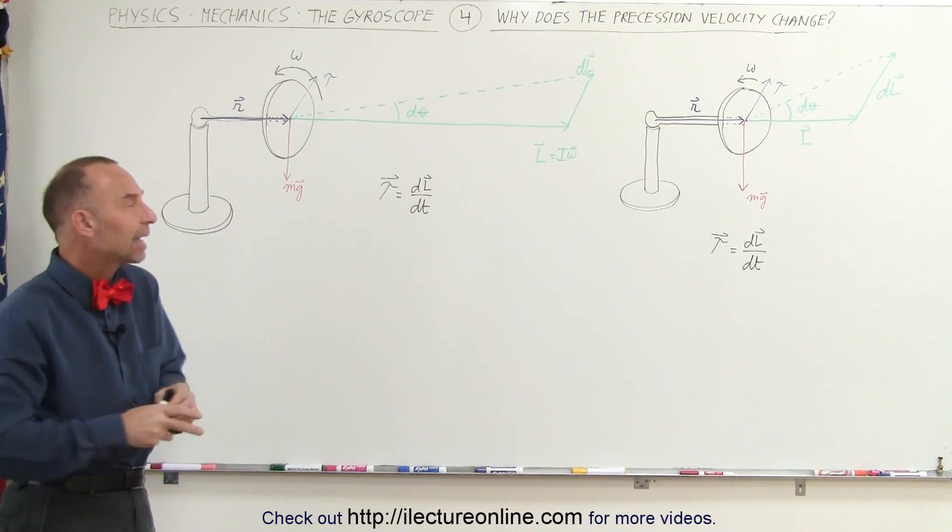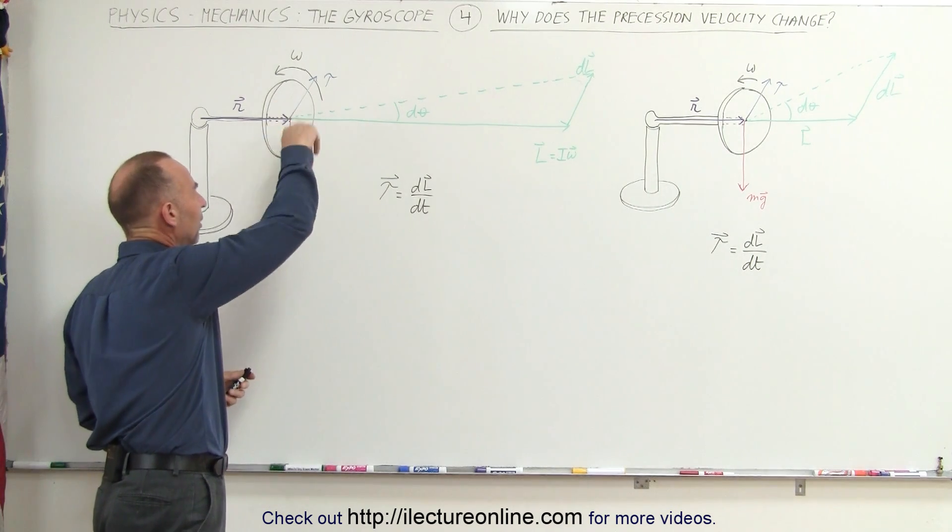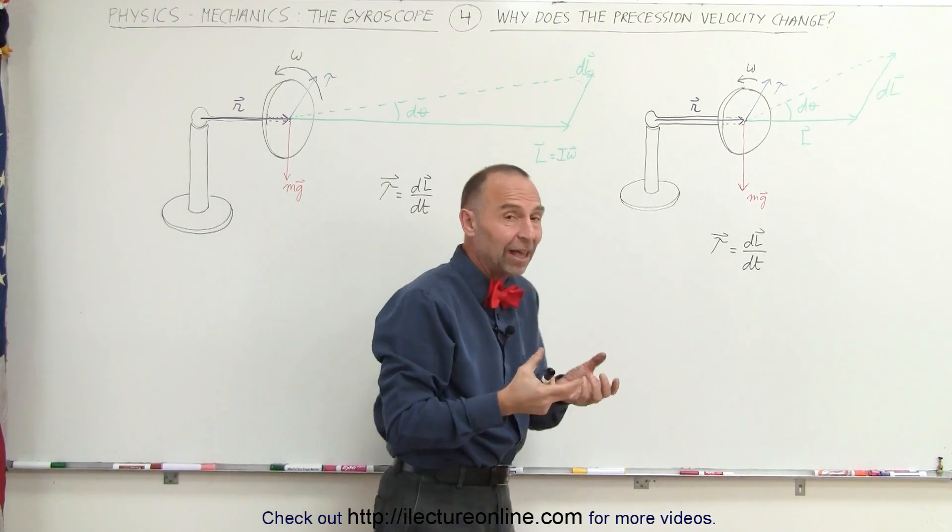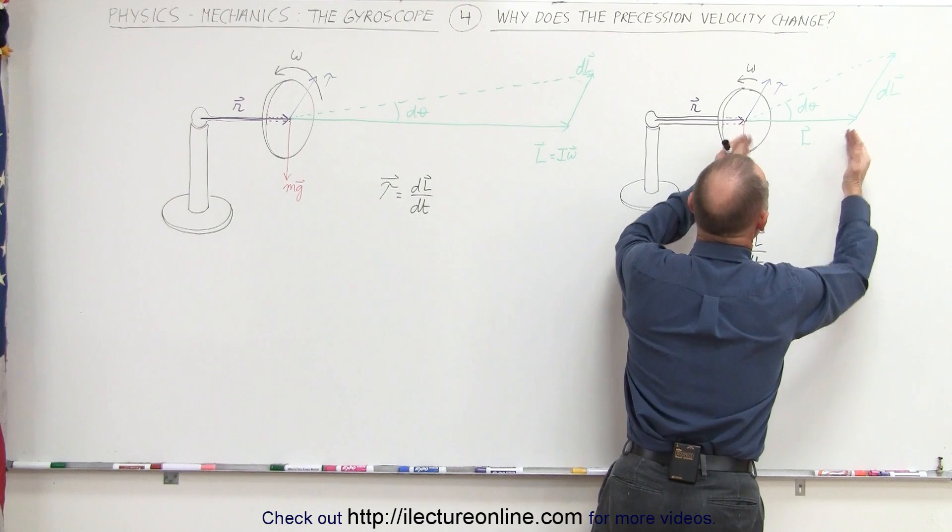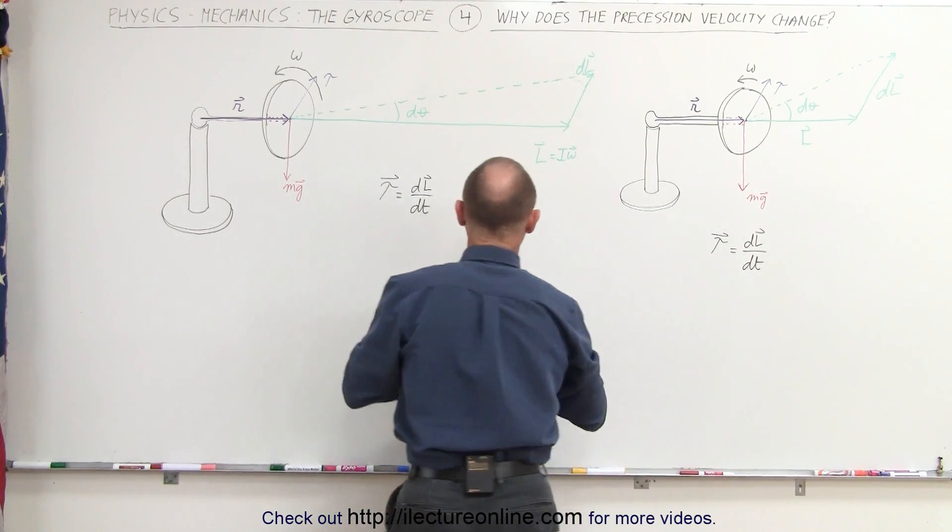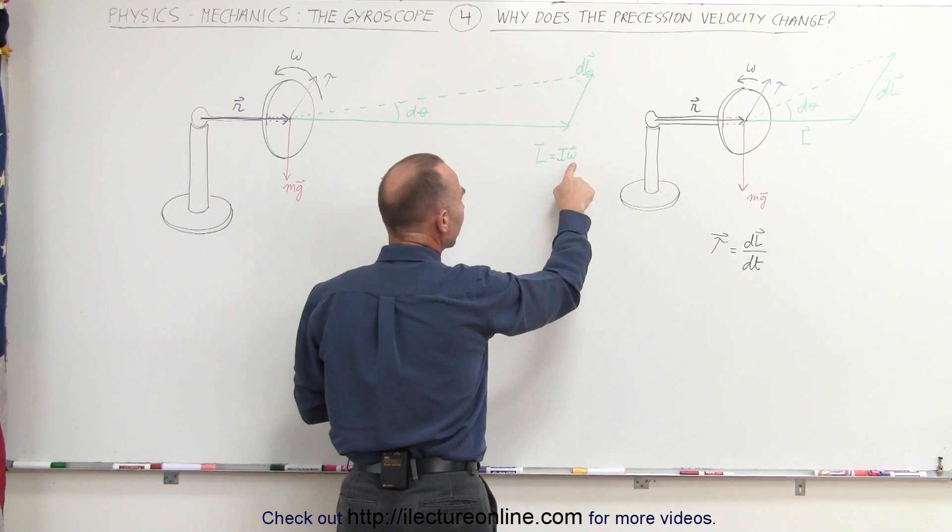So when friction acts and the angular velocity of the disc begins to slow down, what happens is the angular momentum of the disc decreases. Remember the equation that the angular momentum is equal to I times omega.